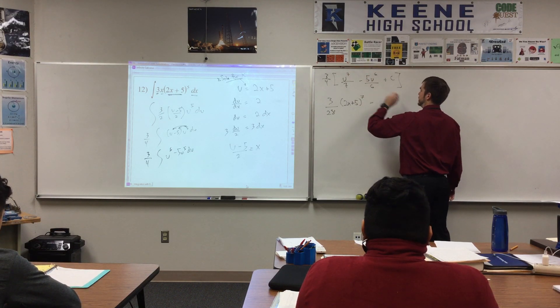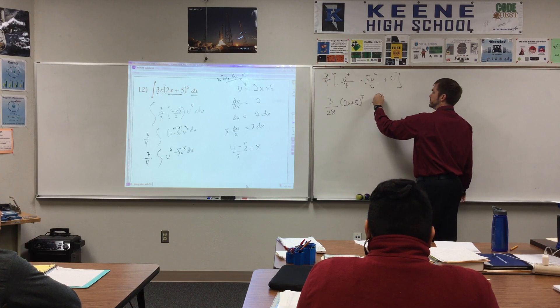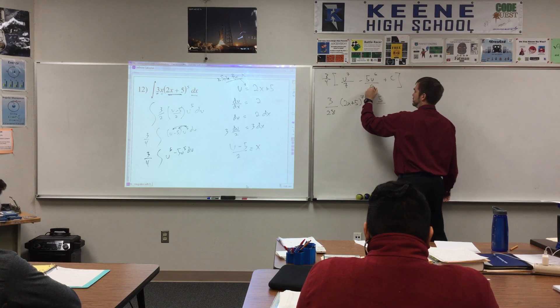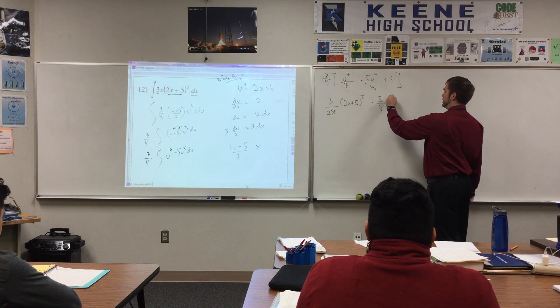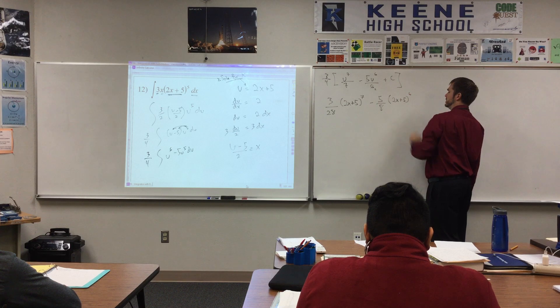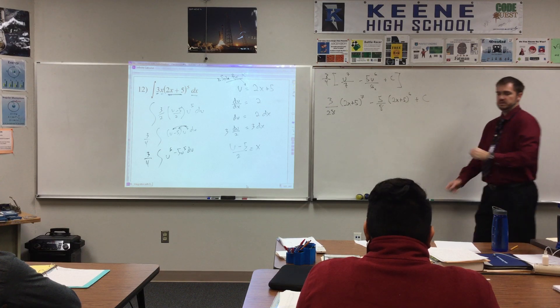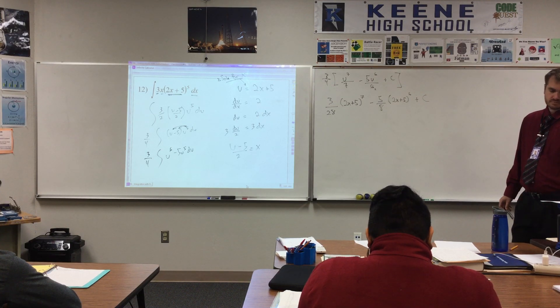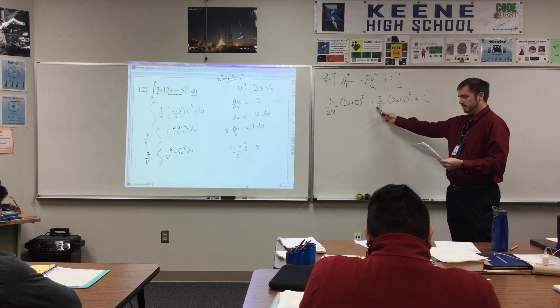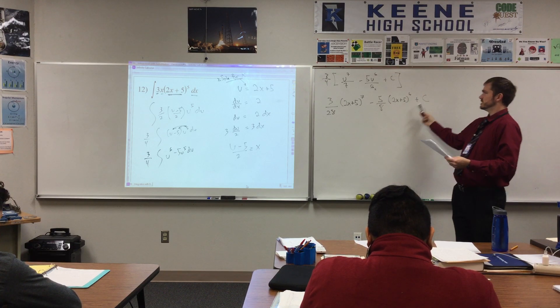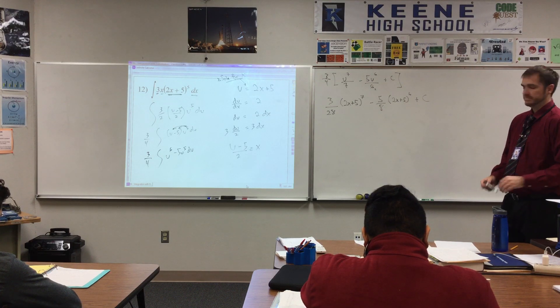Minus, distributing that 3 fourths, 3 times, well, that 3 would cancel, would reduce to a 1, and this would reduce to a 2. So, that would be 5 over 4 times 2, so 5 eighths. Instead of writing u to the sixth, I'll write 2x plus 5 to the sixth. And then 3 fourths of a constant is just another constant. So, 3 over 28 times 2x plus 5 to the seventh minus 5 over 8 times 2x plus 5 to the sixth plus C. Yep, that looks great. And that's our answer there.